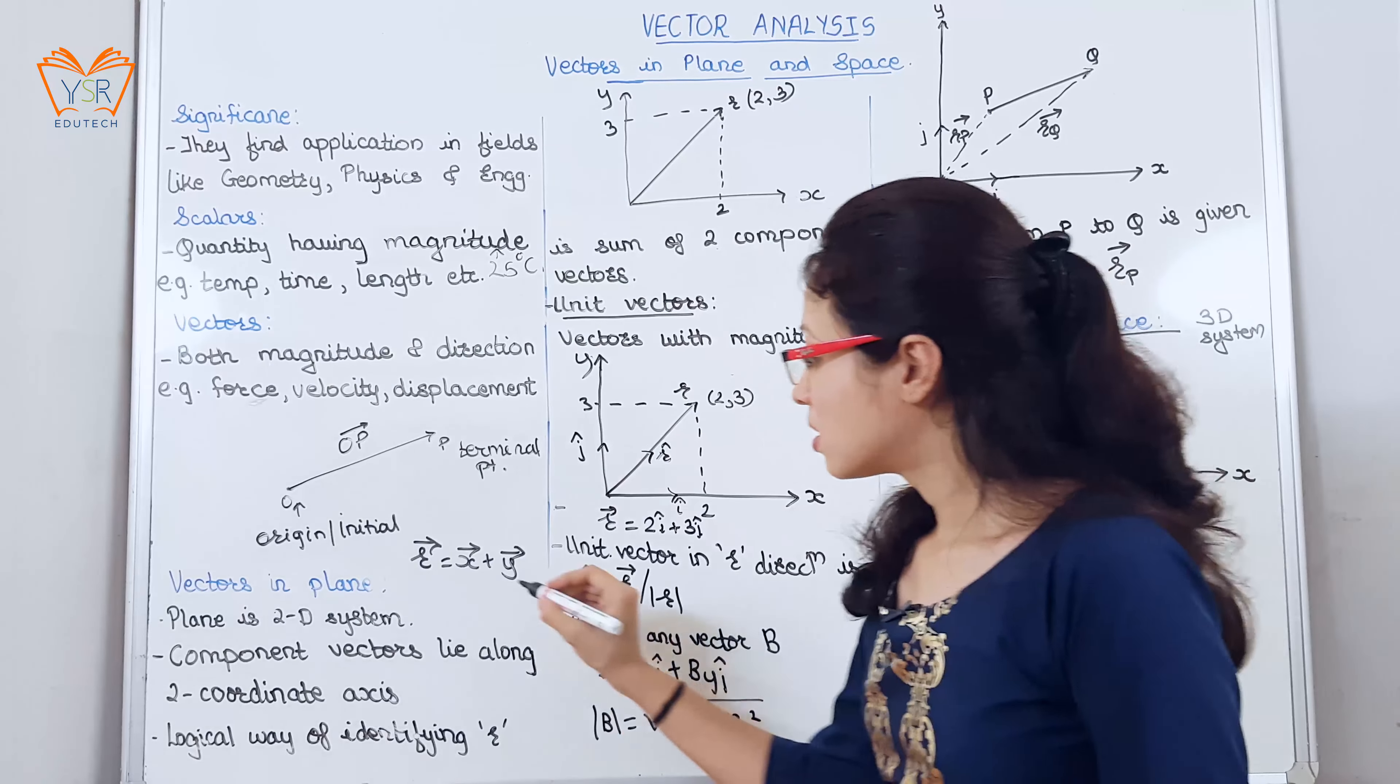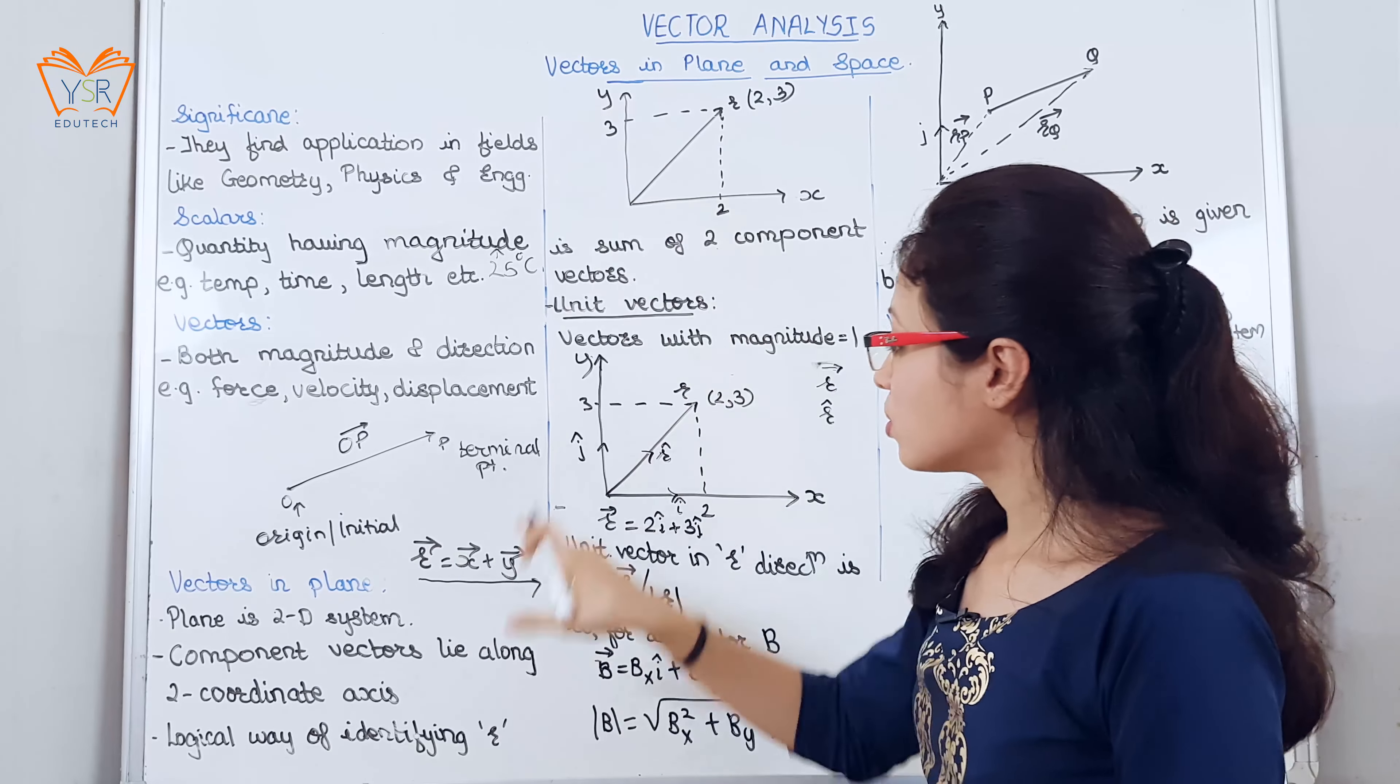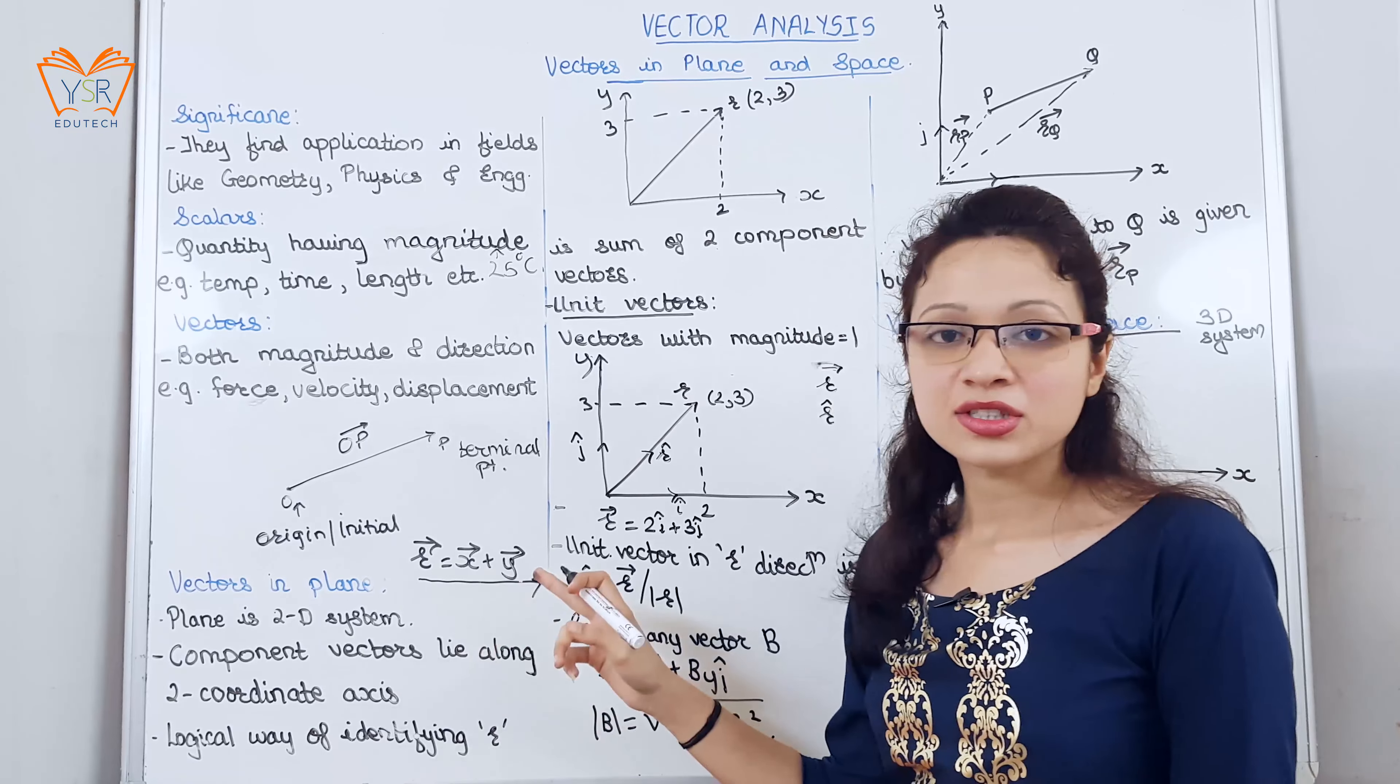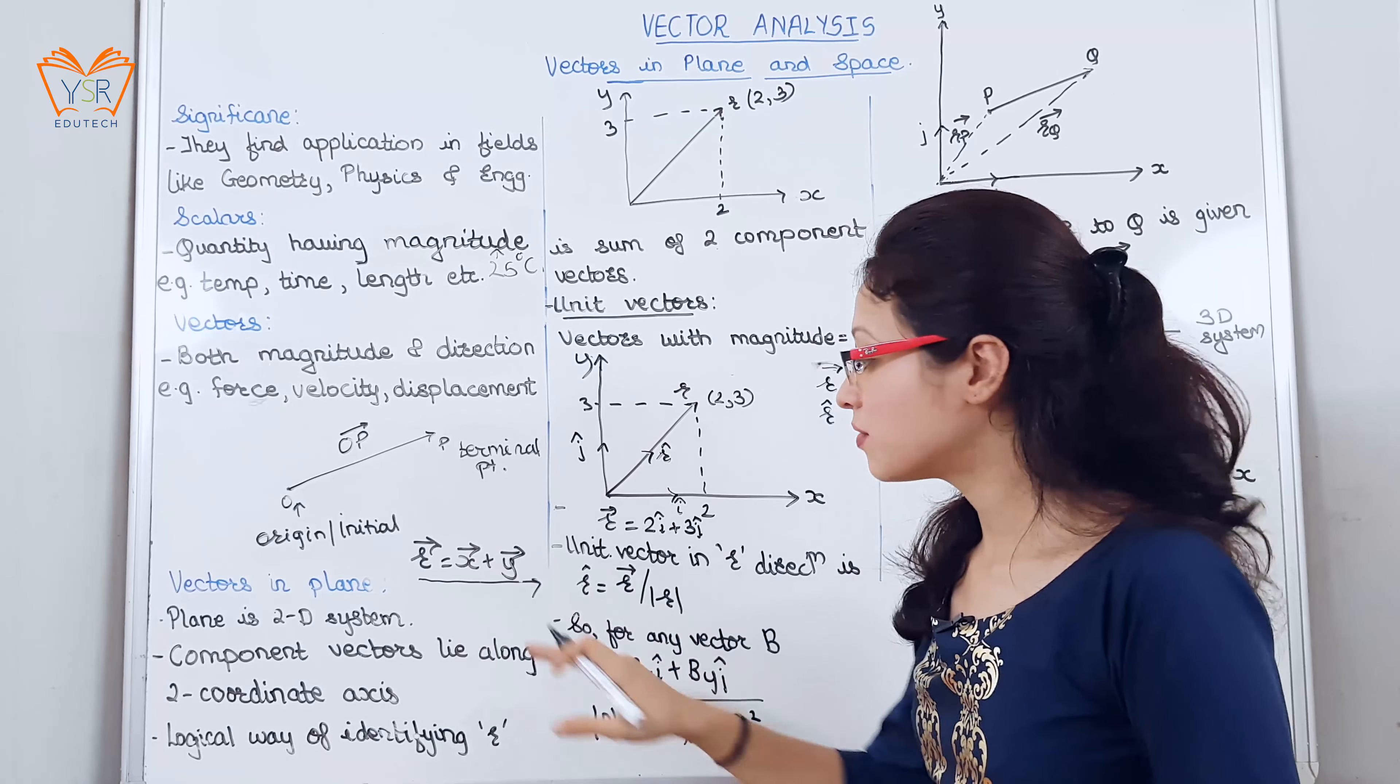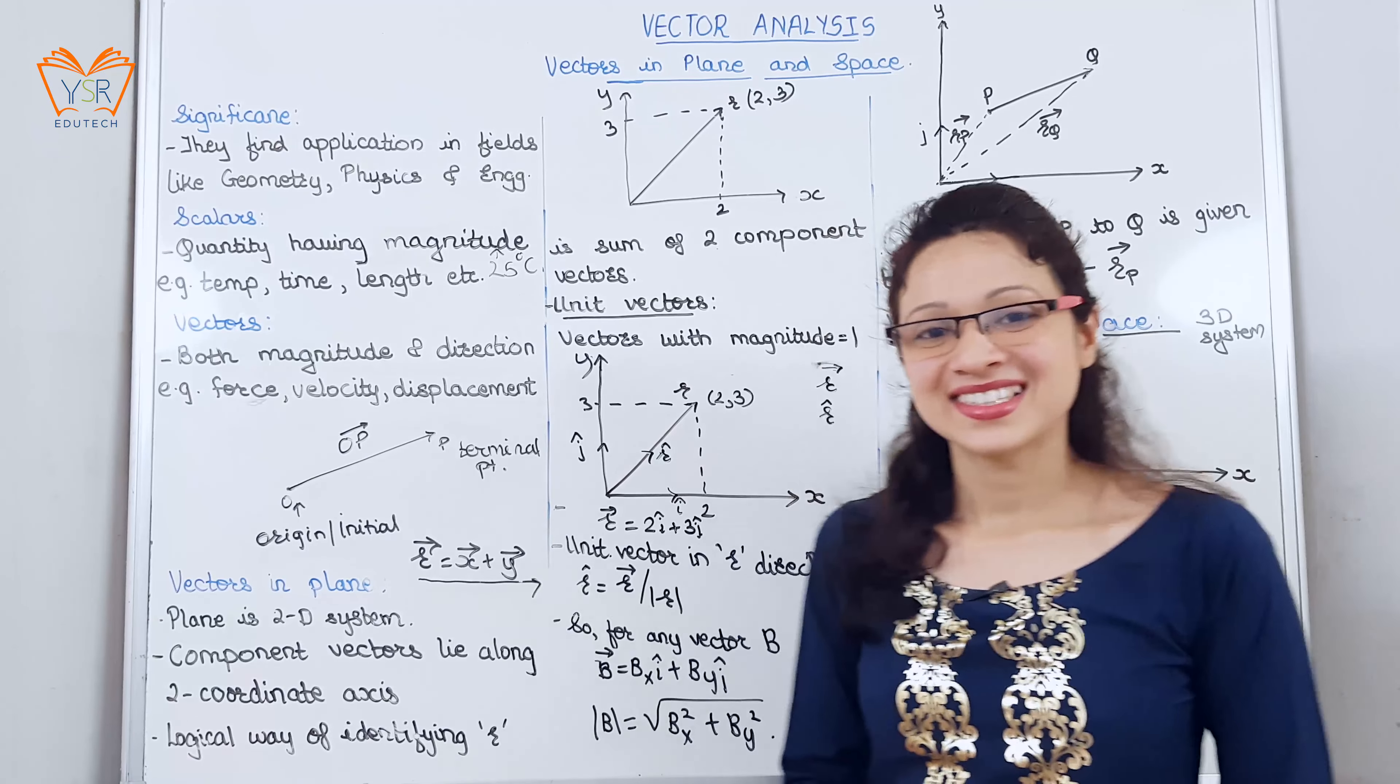One more thing, this vector r is addition of vector x plus vector y. This is from the vector addition. For this you can just refer to my another video from vector addition. This is all about vectors.